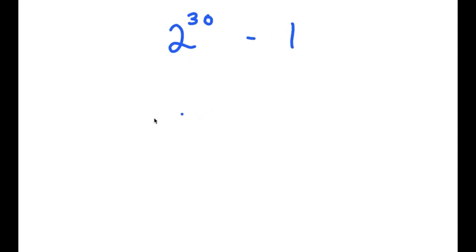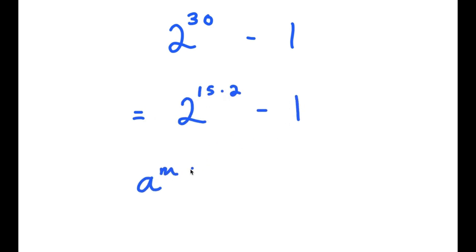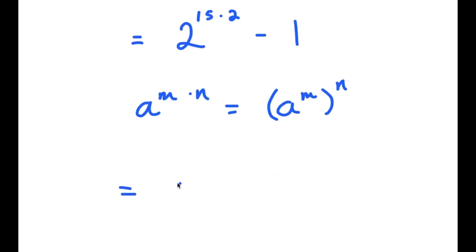Alright, so in this video I'm going to solve the problem 2 to the power of 30 minus 1. So to solve this I'm going to rewrite this as 2 to the power of 15 times 2, minus 1. Now if you have something in the form a to the power of m times n, this is equal to a to the power of m to the power of n. So 2 to the power of 15 times 2 is the same thing as 2 to the power of 15, to the power of 2.